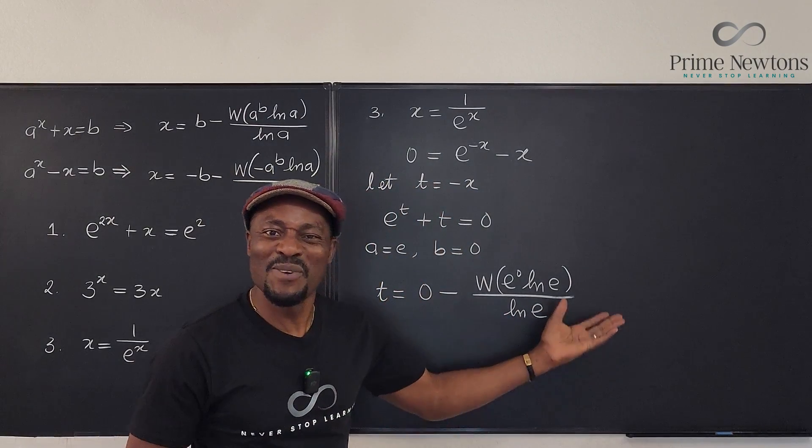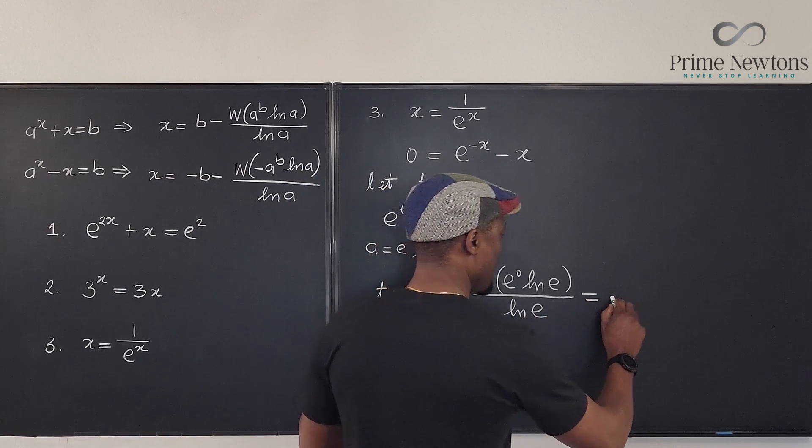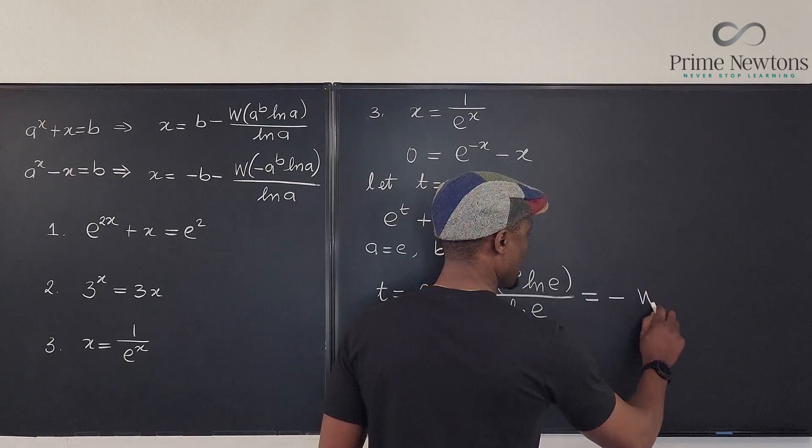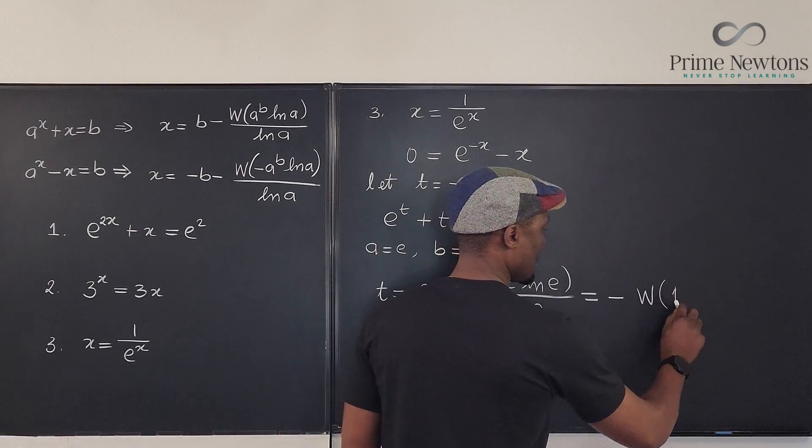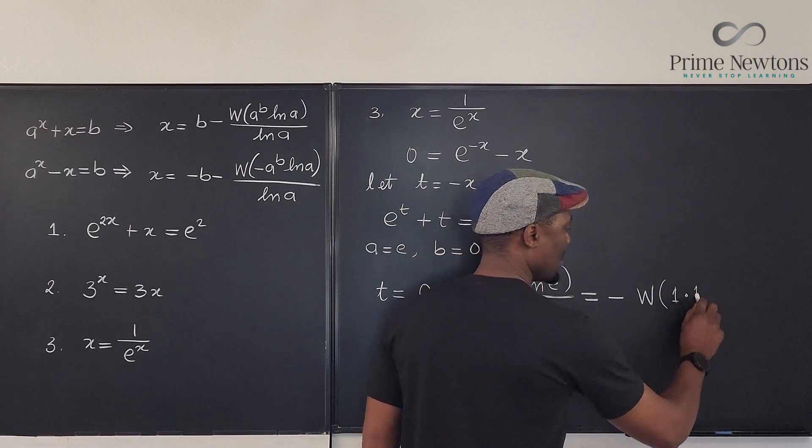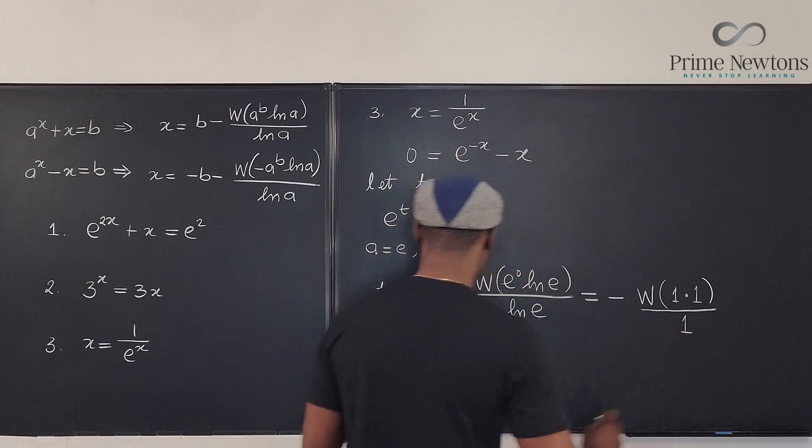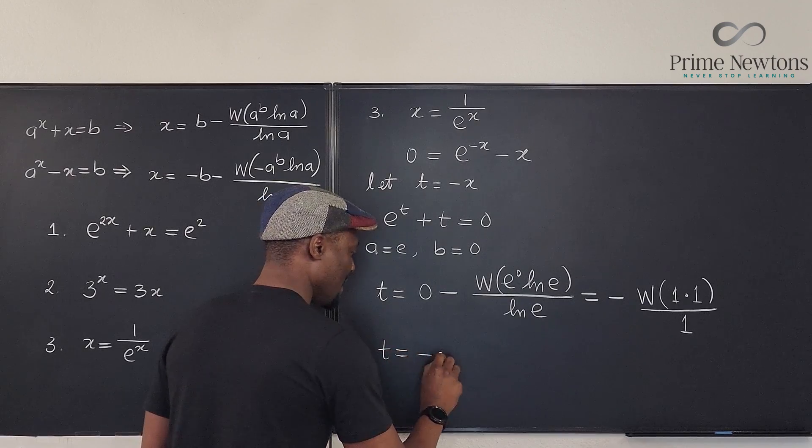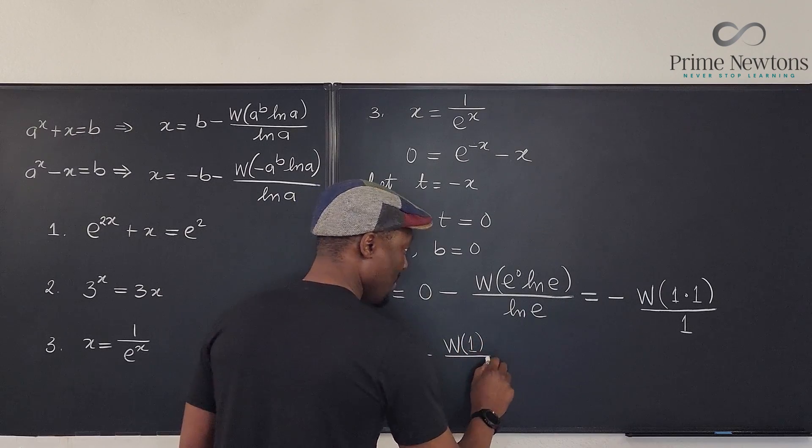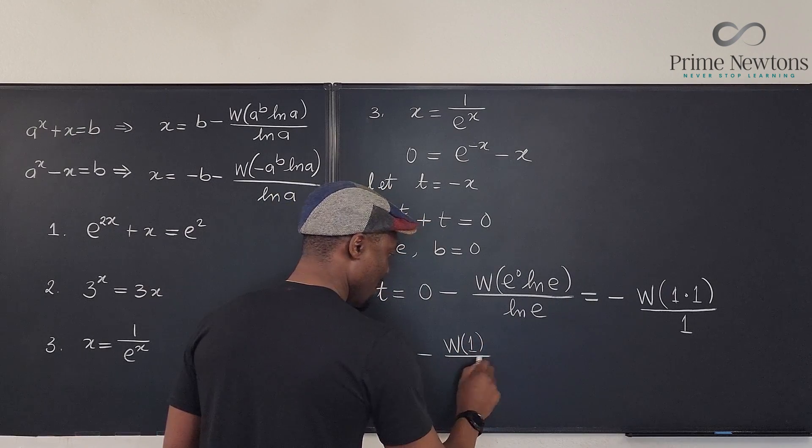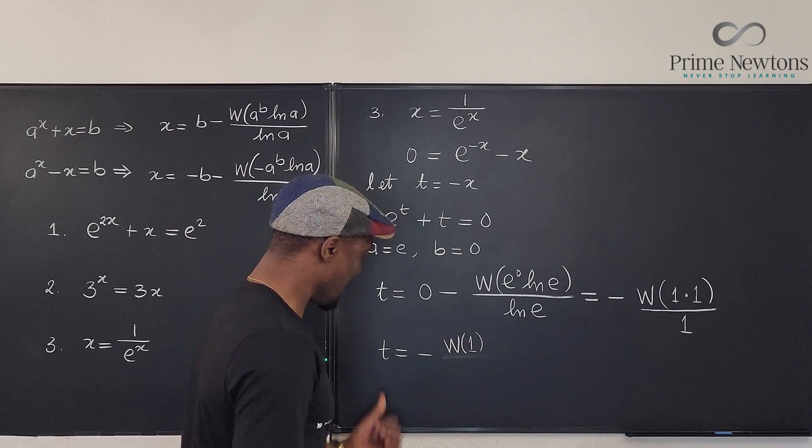And what does this tell us? This tells us that our answer is going to be negative w of e raised to power zero is one. That's one times natural log of e is one divided by natural log of e is one. No! So, t equals negative w of one, one over one. Can you imagine? That's our t.